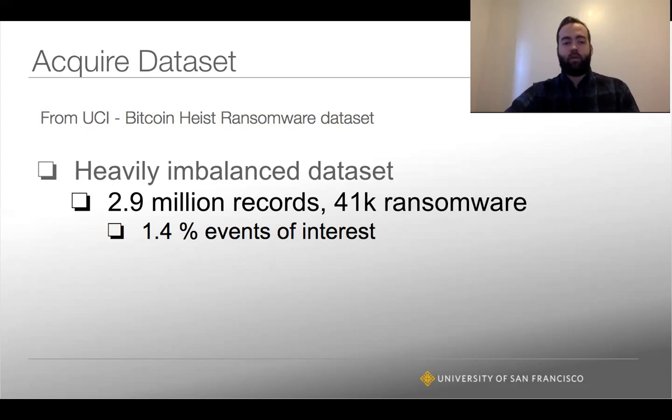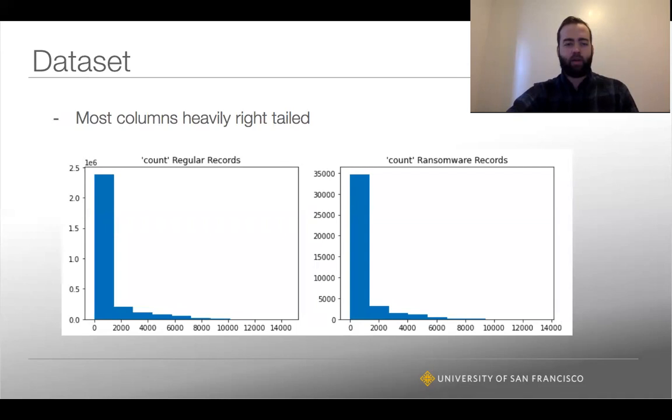It's a heavily imbalanced dataset, which is fairly typical of fraud data. Only 1.4% of the actual records are what we're trying to find, so it's that kind of needle in a haystack problem. It's a large dataset, especially for a single computer - 2.9 million records, and 41,000 of those are ransomware.